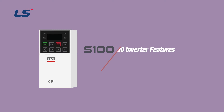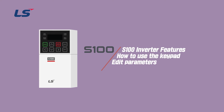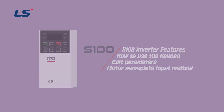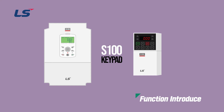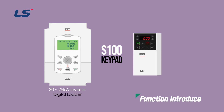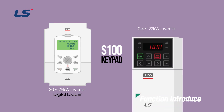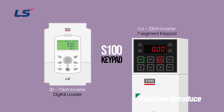Therefore, we will first know the characteristics of the S100 inverter, learn the basic operation method of the keypad, learn how to edit parameters, and finally introduce the basic motor nameplate input method. According to the capacity of the S100 inverter, the keypad is divided into two types. Input voltage 400 volts class inverter capacity: 30 to 75 kilowatt products use digital loader, and 0.4 to 22 kilowatt products use seven-segment keypad.